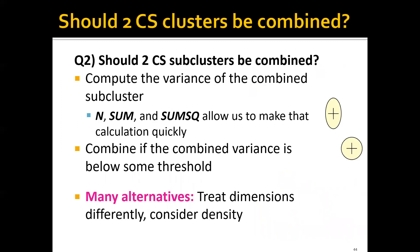For the second question, should two CS sub-clusters or mini-clusters be combined? We can compute the variance of the combined mini-clusters, and remember that we already have the statistics of this mini-cluster. We have N, SUM, and SUMSQ of these two mini-clusters, and we use the equation we discussed before to calculate their average and their variance. We can combine them if the combined variance is below some threshold.